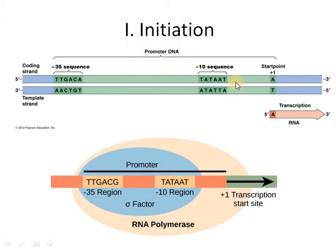Prokaryotes mein, promoter DNA mein, do khaas regions hote hain, do khaas sequences hote hain. Minus 10 — yaani start point se 10 base pairs pehle — ek special sequence hota hai: TATAAT.